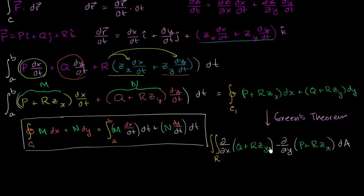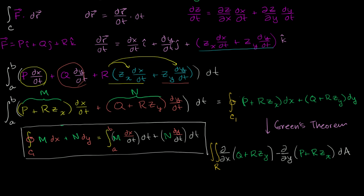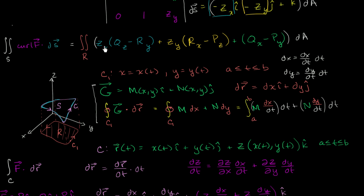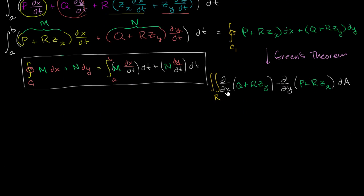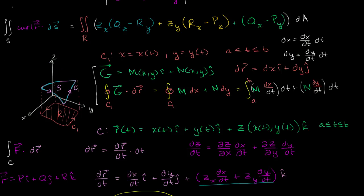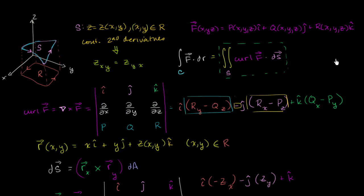So let's actually calculate this. Let's take the partials of each of these expressions, and we'll see that if we expand and simplify, we'll get something hopefully identical to the surface integral. That'll show that this line integral for the special case is the same thing as the surface integral, which will prove Stokes' Theorem for this special case. Now, we need to remind ourselves that p, q, and r are each functions of x, y, and z.